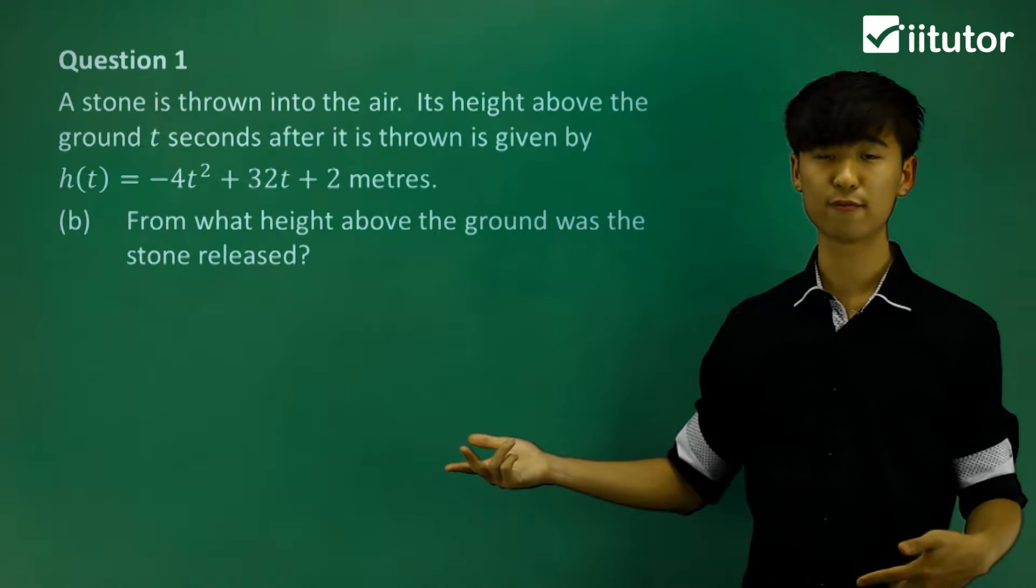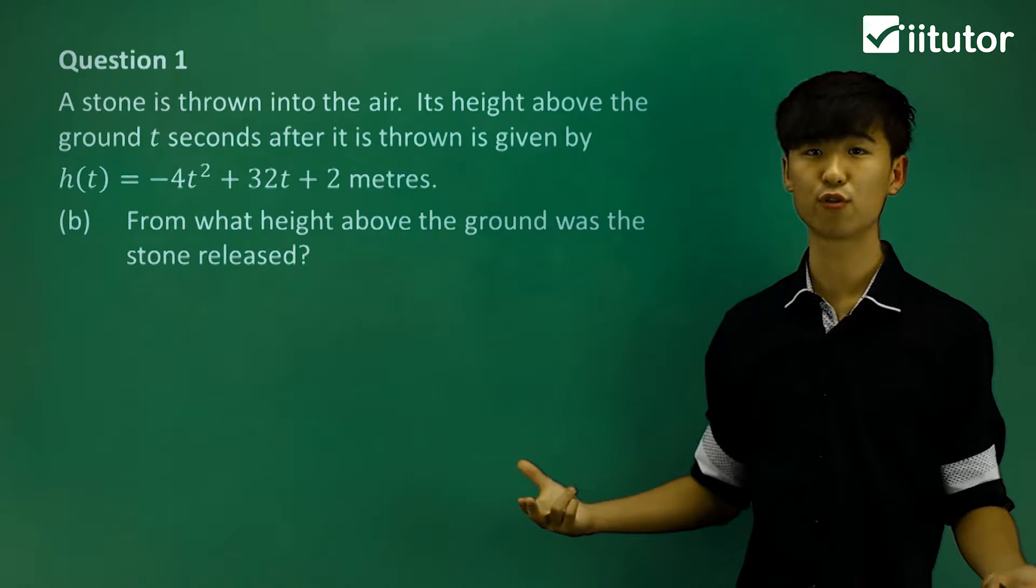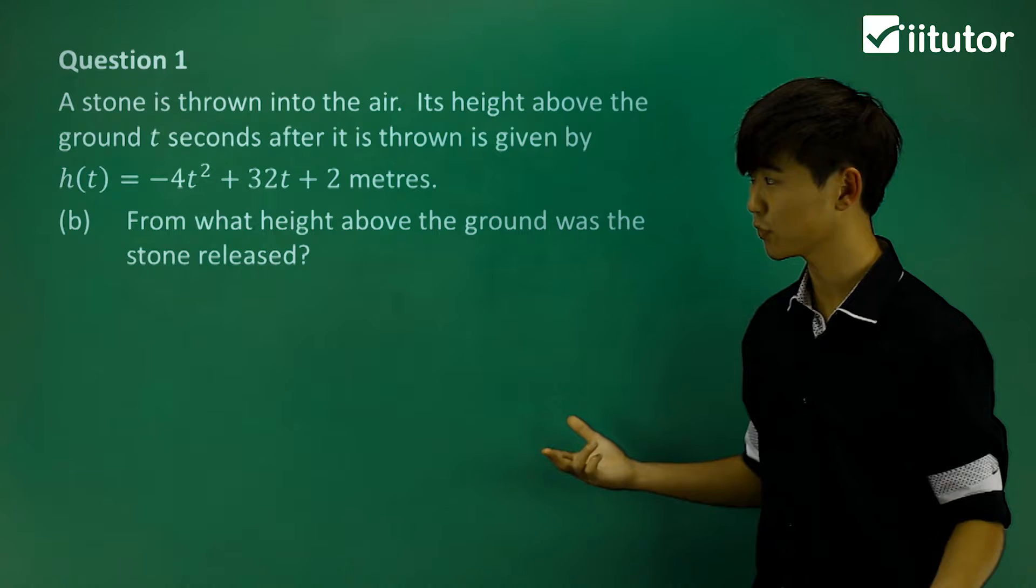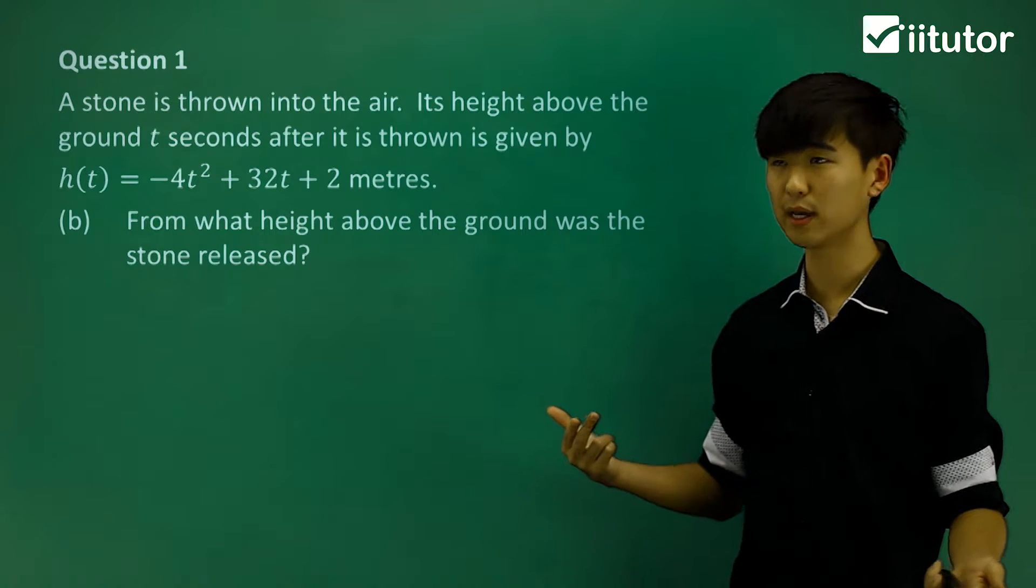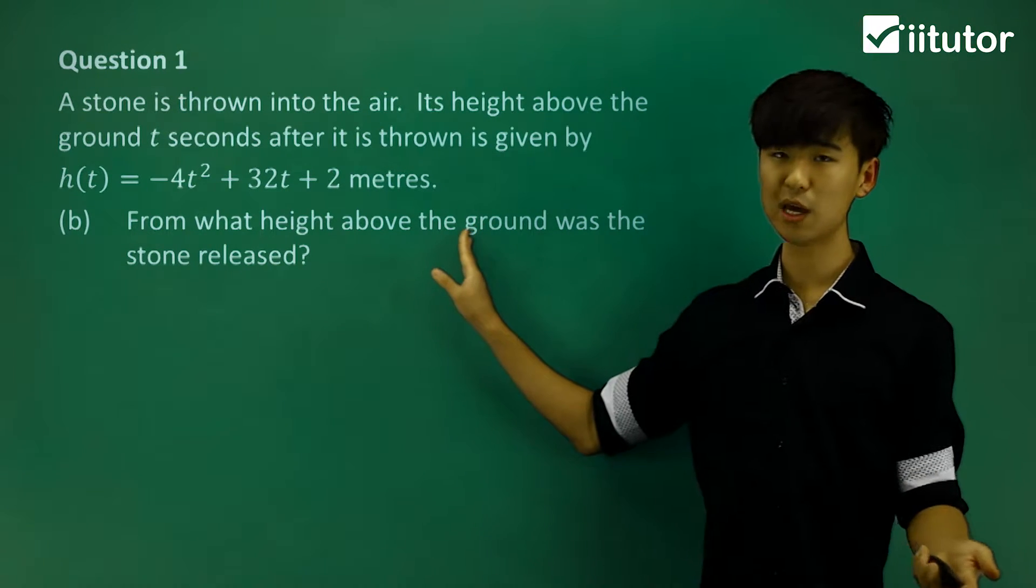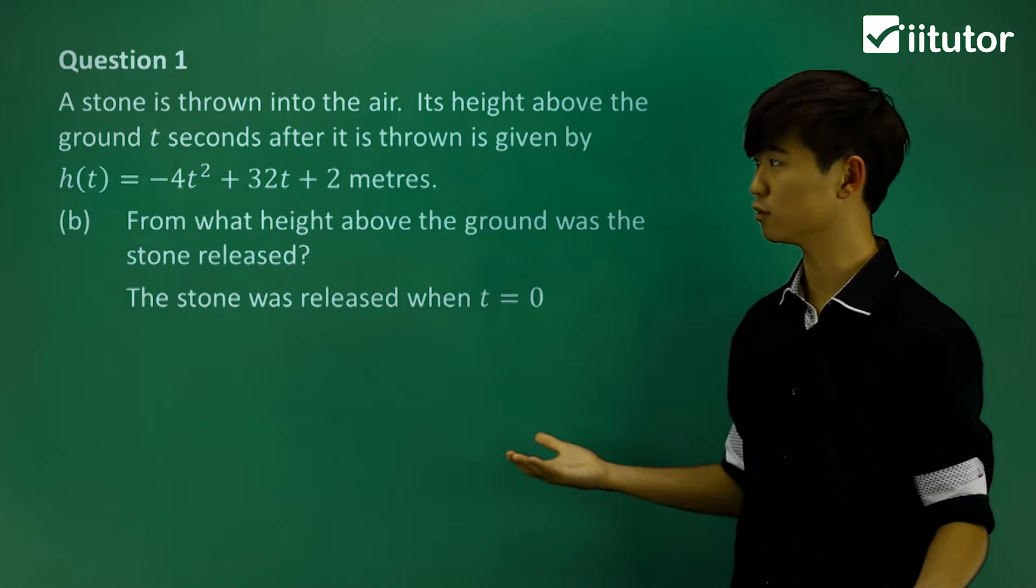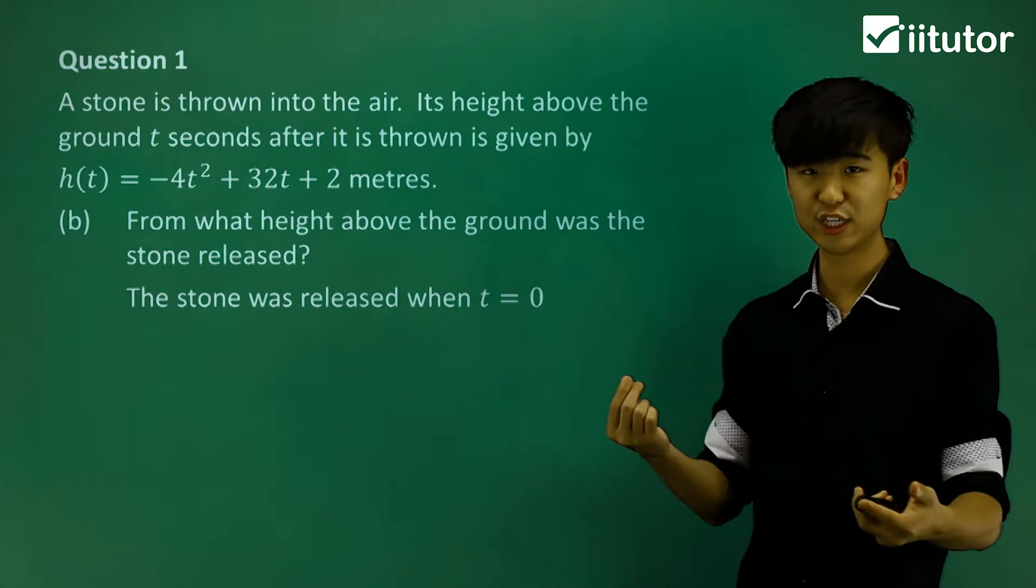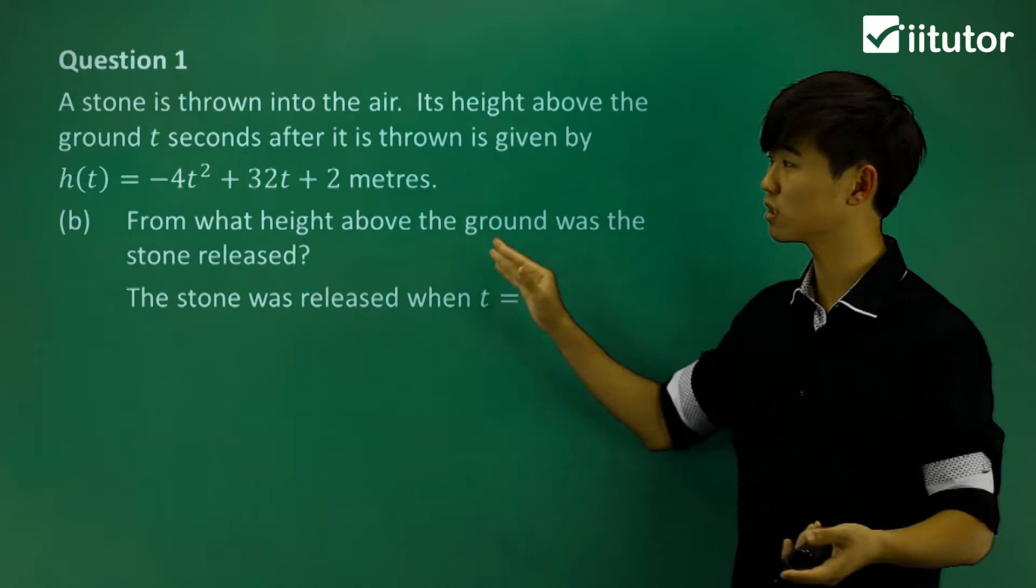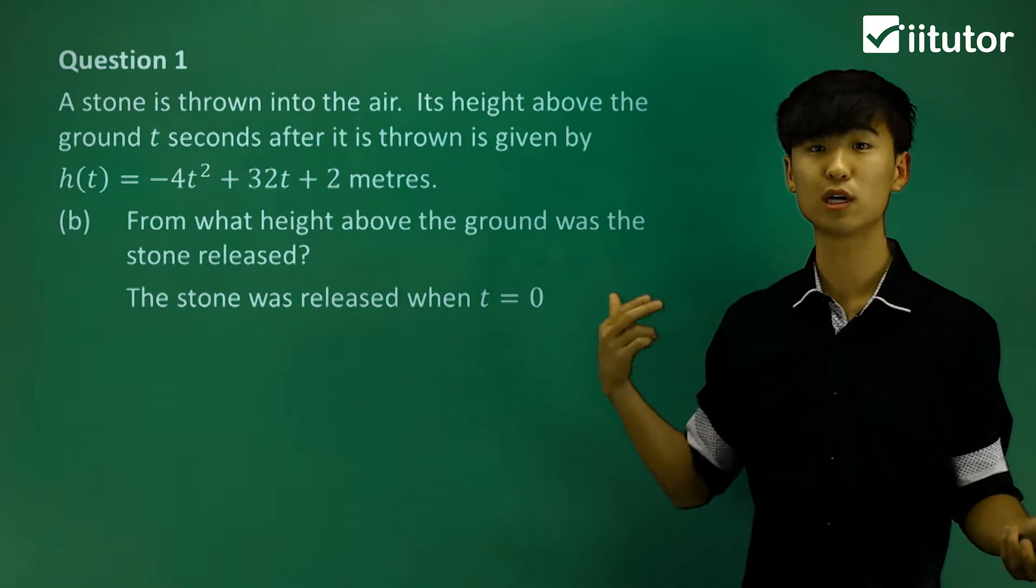From what height above the ground was the stone released? We need to find the height when the stone was released. When the stone was released, t = 0. So initially, at the start, what was the height?